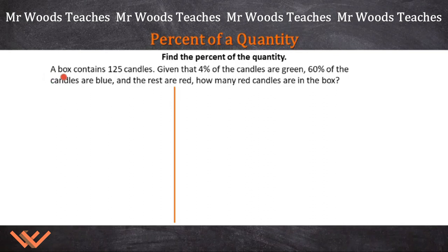This time we're working with a word problem. Let's take a look at this word problem. What we have here, it says, a box contains 125 candles. Given that 4% of the candles are green, 60% of the candles are blue, and the rest are red, how many red candles are in the box?